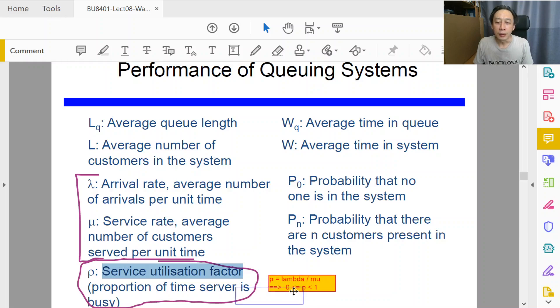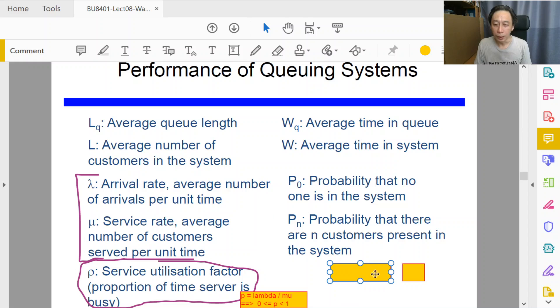Next in our discussion will be these four numbers. Let me just quickly draw up two blocks. Okay, so this is the queue and this is the server.